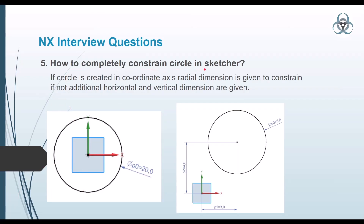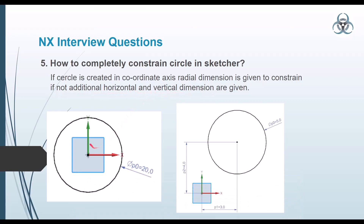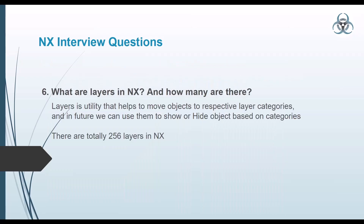How do you completely constrain a circle in the sketcher? This is a tricky question with two answers — the interviewer will expect both. If the circle is created exactly at the origin of the sketch, a radial dimension alone will completely constrain it. But if the circle is created at some distance from the origin, you additionally need a horizontal dimension and a vertical dimension — only then can you completely constrain the circle.